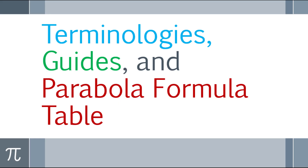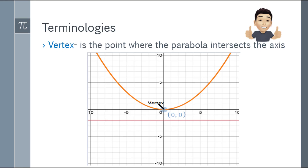To better understand the parabola, let's have some terminologies, guides, and a parabola formula table. First, the terminology: vertex. The vertex is the point where the parabola intersects the axis — it's the exact center of your parabola. Make sure you familiarize yourself with these terminologies because they will help you understand and pass your exam.